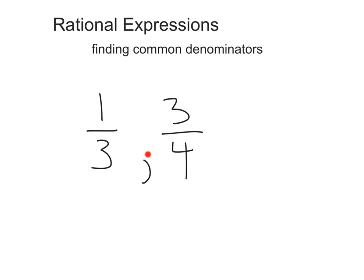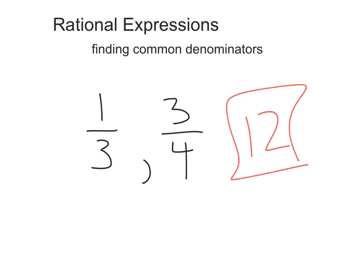Let's start with some basic fractions: one-third and three-fourths. Looking at our denominators, we've got three and four. The common denominator is going to be the least common multiple, or what both of these numbers can go into. We know three and four can go into twelve, so twelve would be our common denominator.